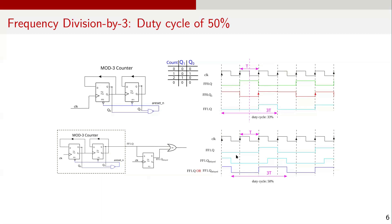Using this idea, if we take FF1Q and pass it through another D flip-flop clocked on the falling edge, the resultant signal, which we will call FF1Q delayed, is shifted by T over 2. Finally, if we take the OR of FF1Q and FF1Q delayed, the output is a signal of frequency f over 3 and duty cycle of 50%.